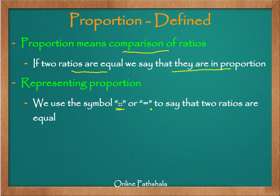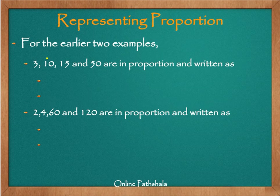We use two colons or an equal-to sign to represent that two ratios are equal. Let us use an example to understand how we represent proportion. We saw an earlier example in which we had four quantities: 3, 10, 15, and 50. These four are in proportion.